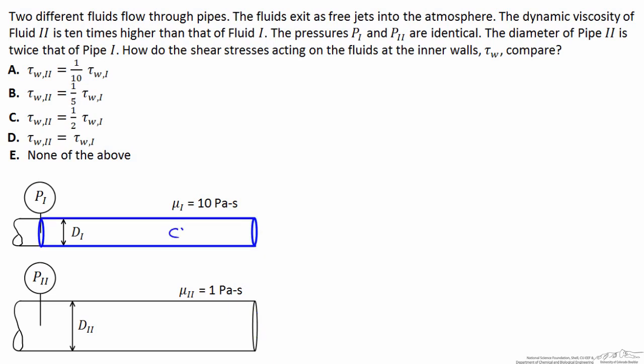The tip for solving this problem is to draw a control volume on both pipes, as shown here in blue for the first pipe.